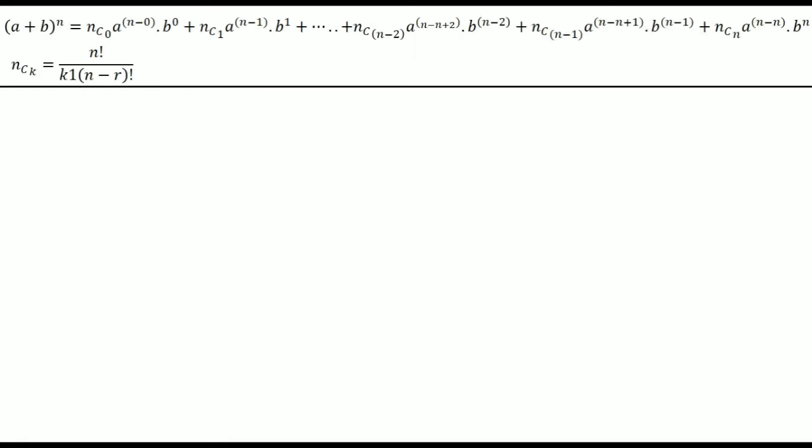Now we apply the binomial theorem to our problem. We are given that sin to the power 10x plus cos to the power 10x equals 11 by 36, and x is a real number. We know that sin squared x plus cos squared x equals 1, which is our basic trigonometric identity, always valid for real numbers. Now we raise both sides to the 5th power — we will use the binomial theorem for expanding a plus b to the power 5.